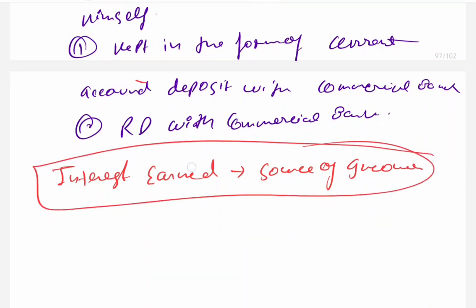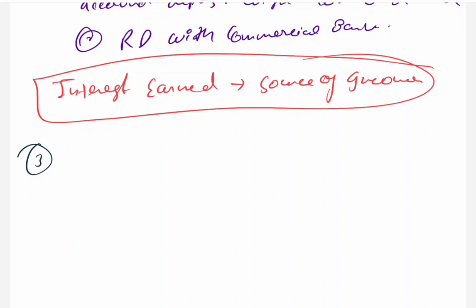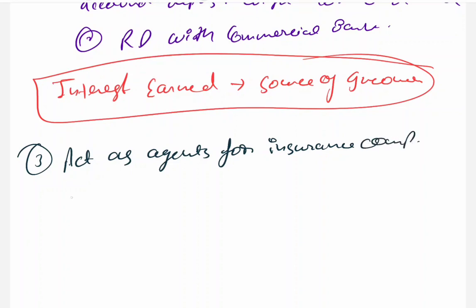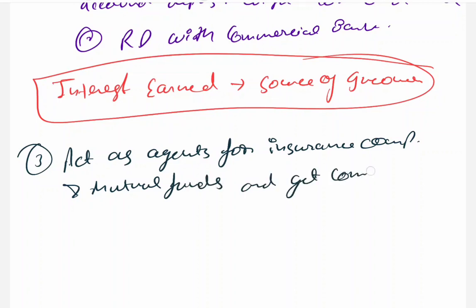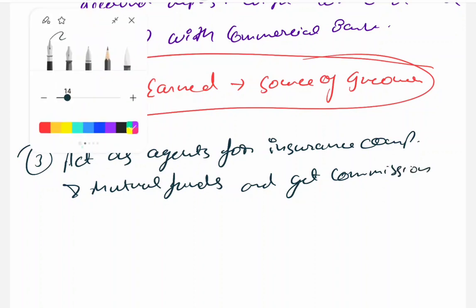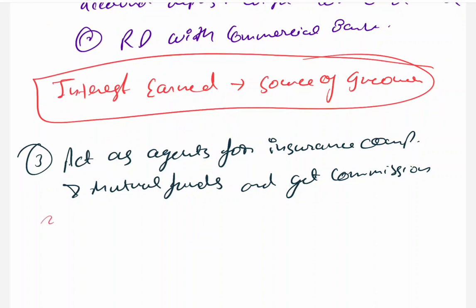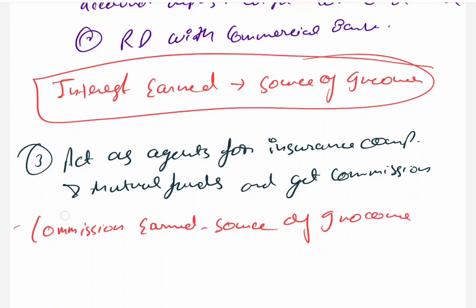The third source of income: Payment Banks can act as agents for insurance companies and mutual funds and earn commission. This is another way they make money — commission from acting as agents for insurance companies and mutual funds.